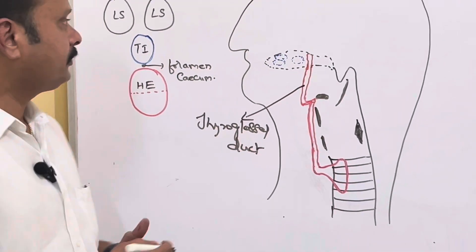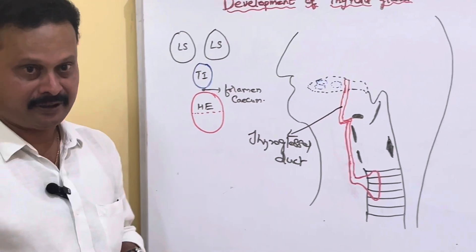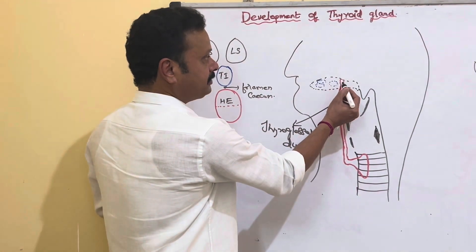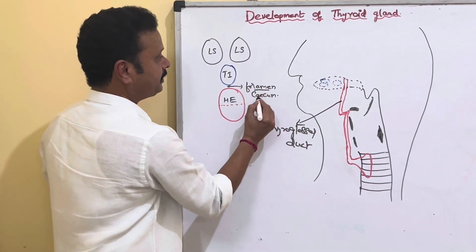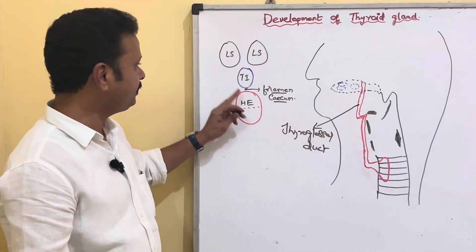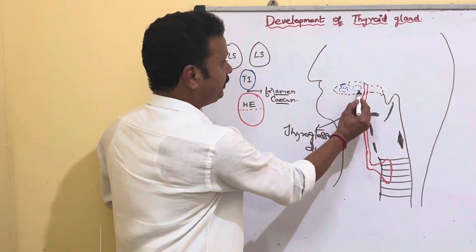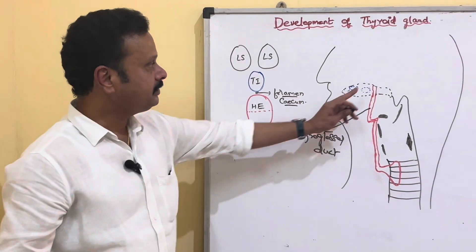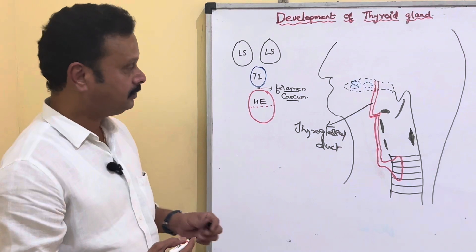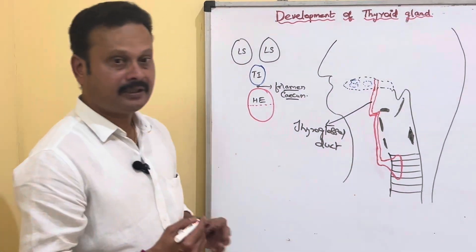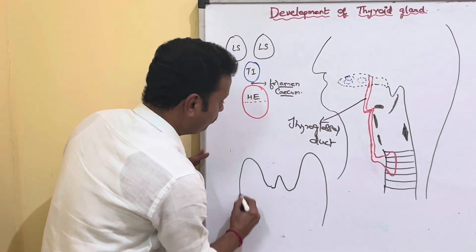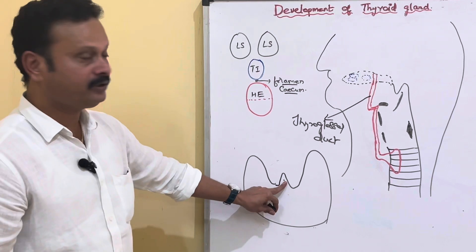Later, this thyroglossal duct disappears, leaving a trace of its beginning in the substance of the tongue — that forms the foramen cecum. The remnant of the proximal part of the thyroglossal duct within the tongue, at the junction between the anterior two-thirds and posterior one-third, persists as the foramen cecum. Similarly, the lower part of the thyroglossal duct may sometimes persist and form the pyramidal lobe above the isthmus.